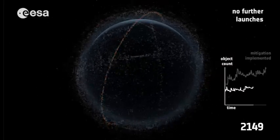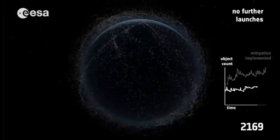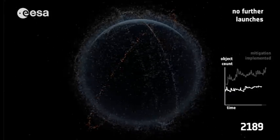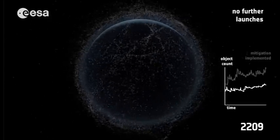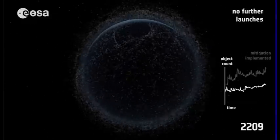This is caused by cascading collisions between resident objects and fragments of prior collisions. That scenario indicates that the critical density of objects in the low Earth orbits has already been exceeded.